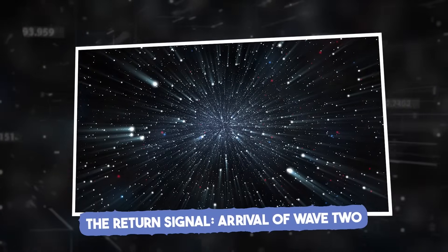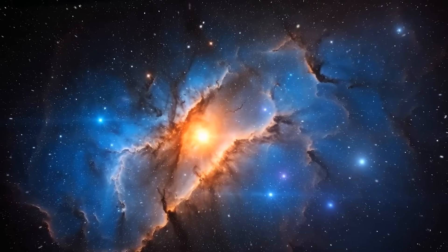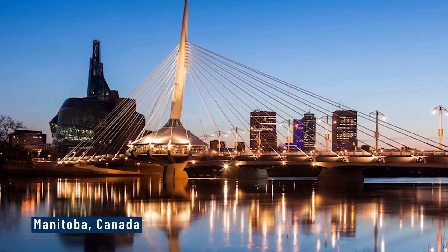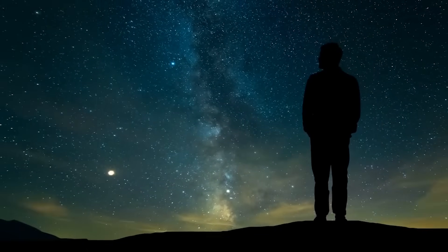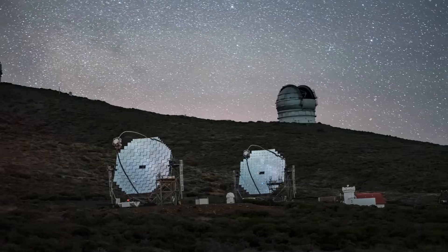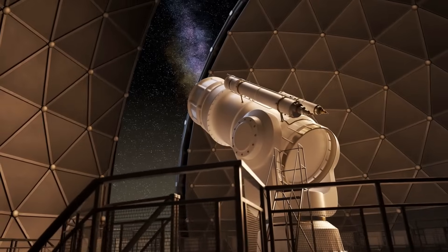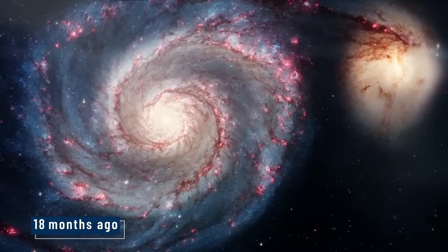The return signal, arrival of wave 2. At 3:47 a.m. Eastern Time, radio arrays near Manitoba, Canada, lit up with an alert unlike any in recent memory. The raw intensity was enough to trip safety thresholds. Within seconds, confirmation rolled in from observatories in New Mexico and Western Australia. All three instruments pointed to the same origin in the Andromeda galaxy, just like they had 18 months ago.